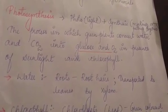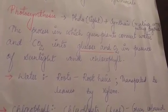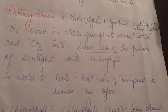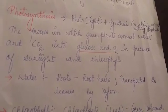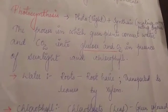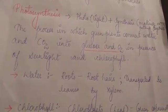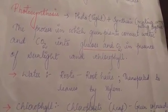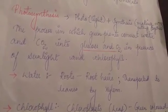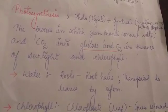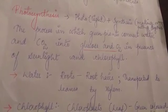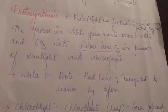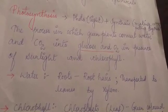So let's see what is photosynthesis. The word photo means light, whereas synthesis means to make or to put together. Photosynthesis is a process in which plants prepare their own food by using carbon dioxide, water, and chlorophyll in the presence of sunlight.